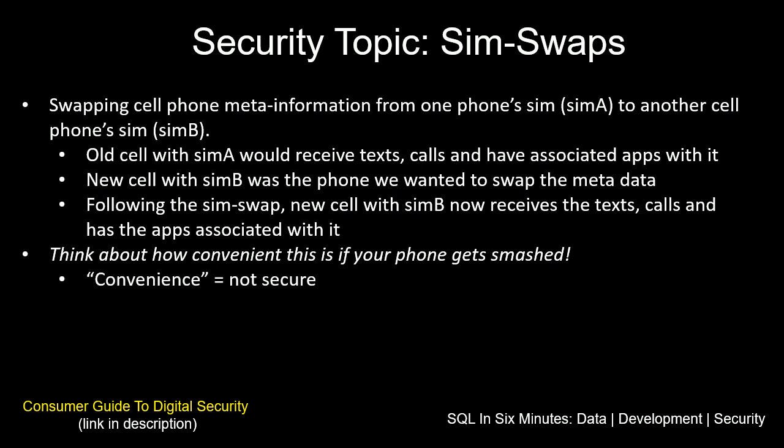So we have two phones. We have the old phone with all the information — it receives texts, calls, and has apps associated with it. Then we have SIM B, a new cell phone. What we want to do is swap all of the meta information from the old phone with SIM A to the new phone with SIM B. Think about how convenient this is if your phone gets smashed and you can call customer service to do the swap. Following the sim swap, the new cell phone with SIM B now receives the texts, calls, and has the apps associated with it.